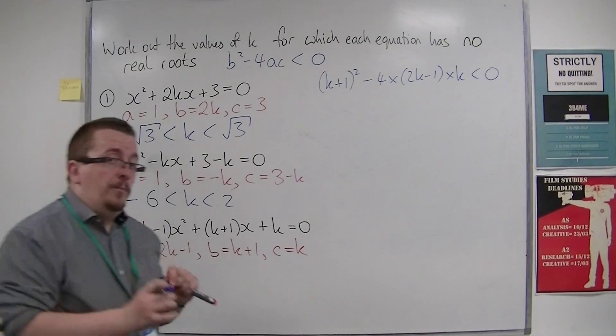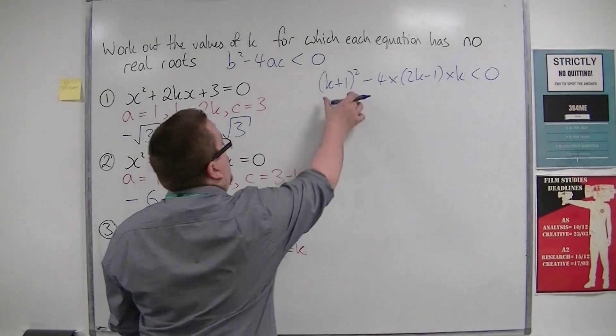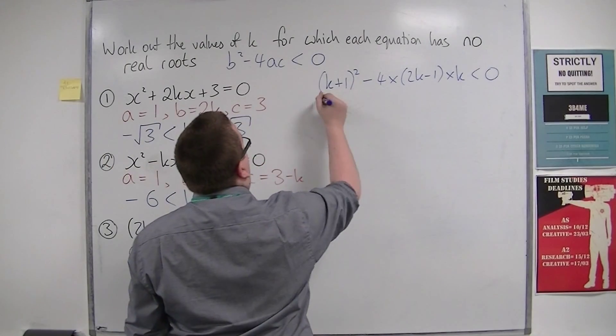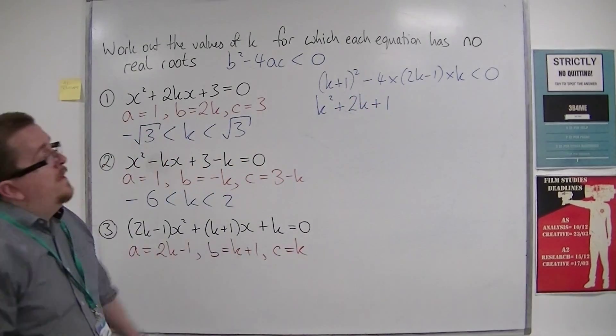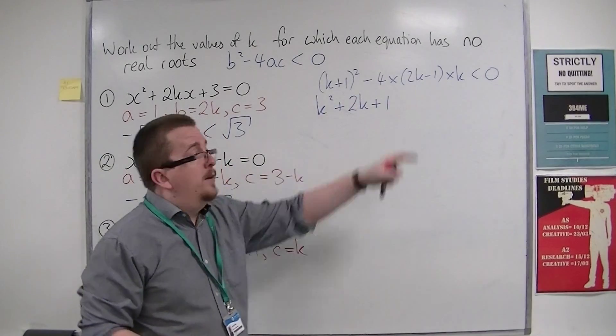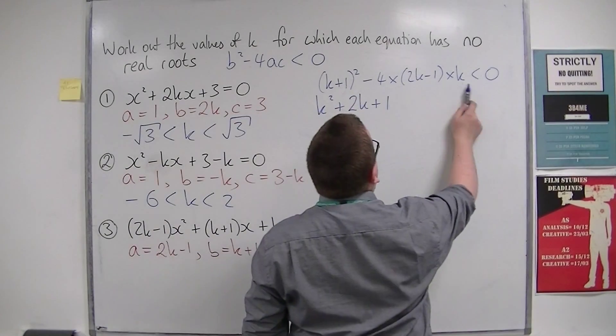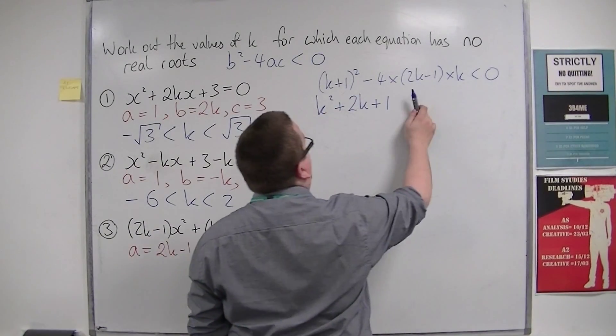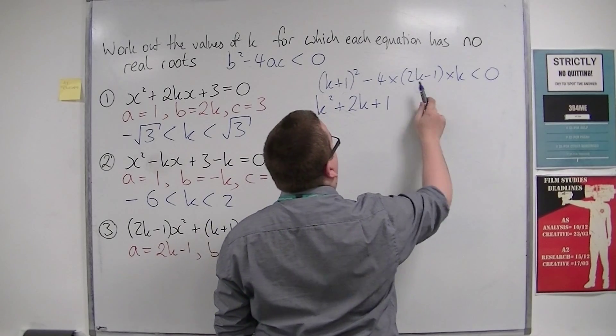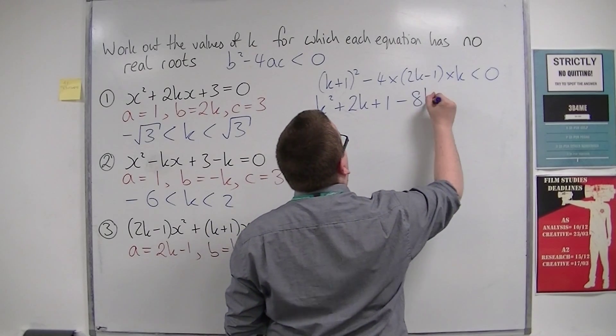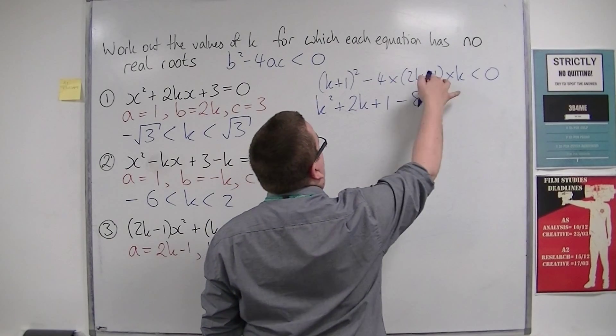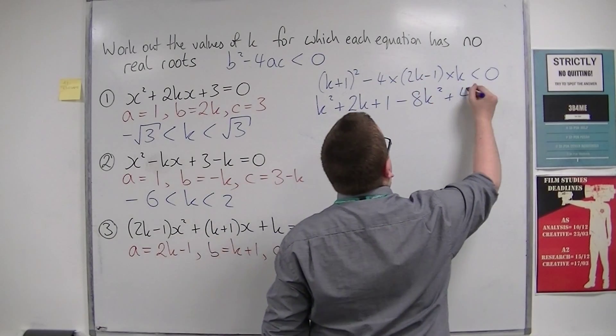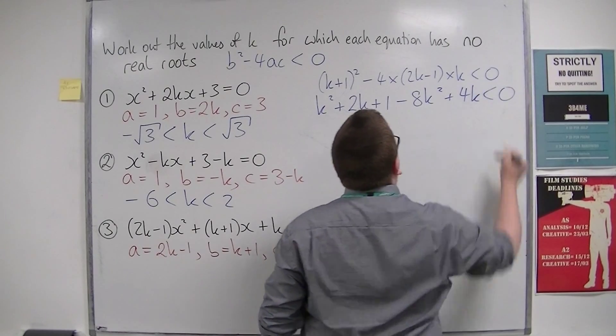We're going to have to expand these brackets. Expanding (k + 1)²: k² + 2k + 1. Then tidying this bit up: -4k × 2k is -8k², and -4k × -1 is +4k. That's all got to be less than 0.